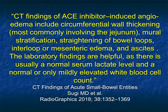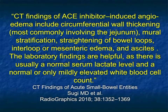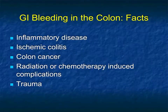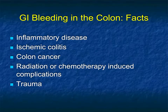You can see the pattern of mural stratification, straightening of bowel loops, interloop or mesenteric edema, and ascites — all things we think about with many of the pathologies described today. It's a great mimicker, and unless you think of the history, you can see why the patient could end up in surgery because of concern for ischemia. The lactate will be negative in these patients typically, so that's very important.